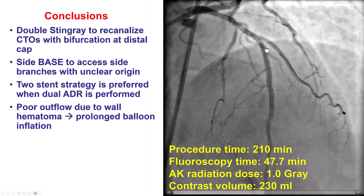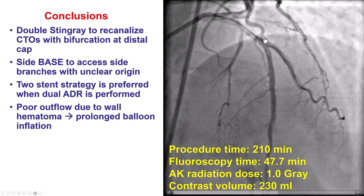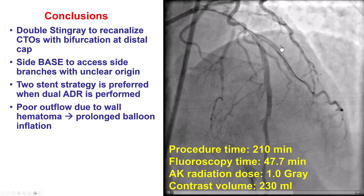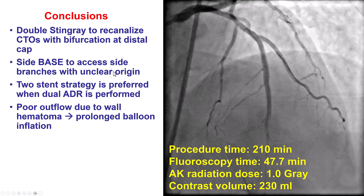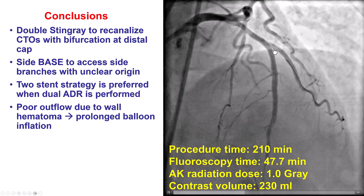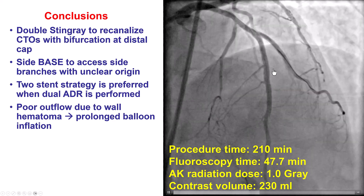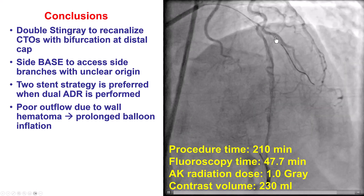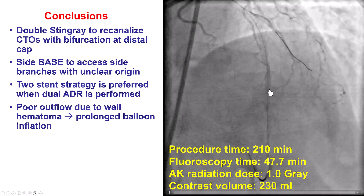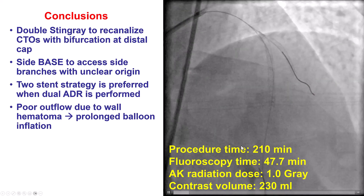In summary, we had a CTO with bifurcation on the distal cap. We had to use the Stingray twice — once in the main vessel (the LAD) and once into the diagonal branch. To wire into the diagonal after crossing the LAD, we used the side-base technique. Since we had extensive dissections, we used a two-stent bifurcation strategy with DK-crush. Finally, when we had poor flow in the LAD distal to the stents, we performed a prolonged balloon inflation, which restored TIMI-3 antegrade flow. Thank you.